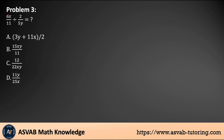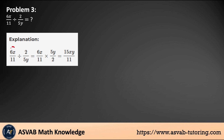Problem number three: 6x over 11 divided by 2 over 5y. For dividing fractions, remember KCF — Keep, Change, Flip. Keep the left side, change the division sign to multiplication, and flip the right side. So we get 6x over 11 times 5y over 2. Simplify: 6 divided by 2 gives 3, and 3 times 5 is 15. The final answer is 15xy over 11.